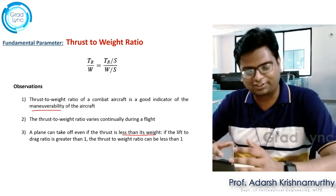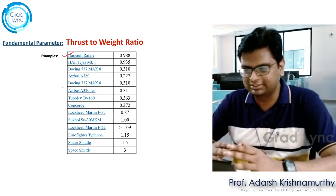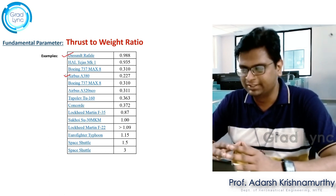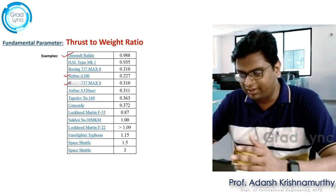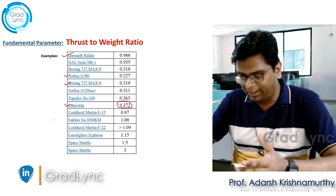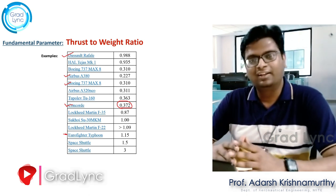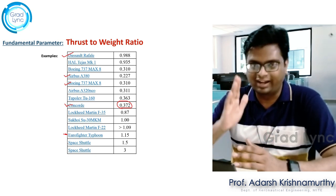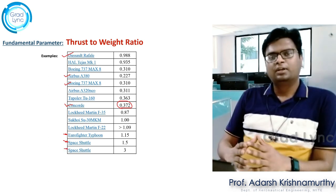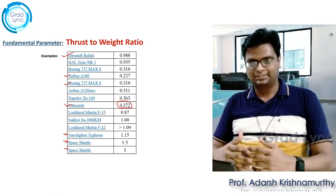Here are a few examples: the Dassault Rafale has a thrust-to-weight ratio of 0.988, the Airbus A380 has 0.227, the 737 MAX is roughly 0.3, and the Concorde was 0.37. Comparing these with fighter aircraft like the Eurofighter Typhoon, whose thrust-to-weight ratio is greater than 1 — meaning it can climb vertically at 90 degrees. Similarly, space shuttles have ratios of 1.5 and 3. In the next lecture, we will be understanding aerodynamic relations used in performance analysis. Thank you very much.